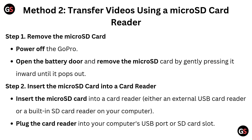Method 2: Transfer videos using a microSD card reader. Step 1: Remove the microSD card. Power off the GoPro, open the battery door, and remove the microSD card by gently pressing it inward until it pops out. Step 2: Insert the microSD card into a card reader — either an external USB card reader or a built-in SD card reader — then plug it into your computer's USB port or SD card slot.